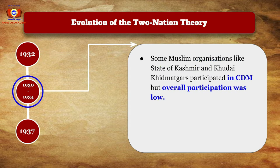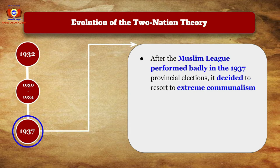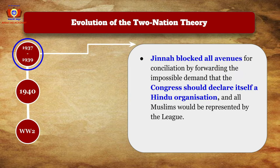Some organizations in the 1930s–34, like those in the State of Kashmir and the Khudai Khidmatgars, participated in the civil disobedience movement, but overall Muslim participation was low. In 1937, after the Muslim League performed badly in provincial elections, it decided to resort to extreme communalism.